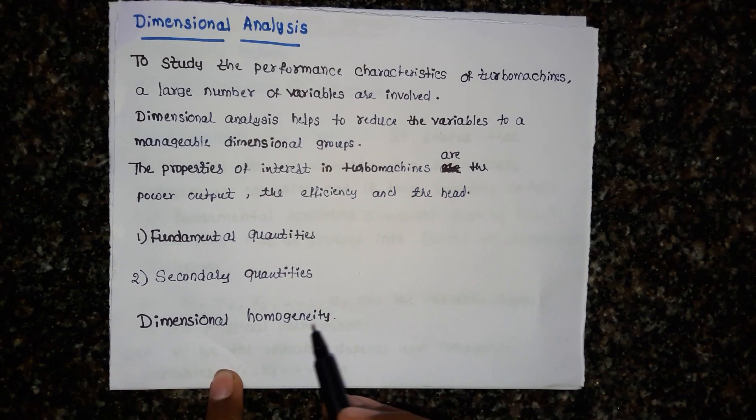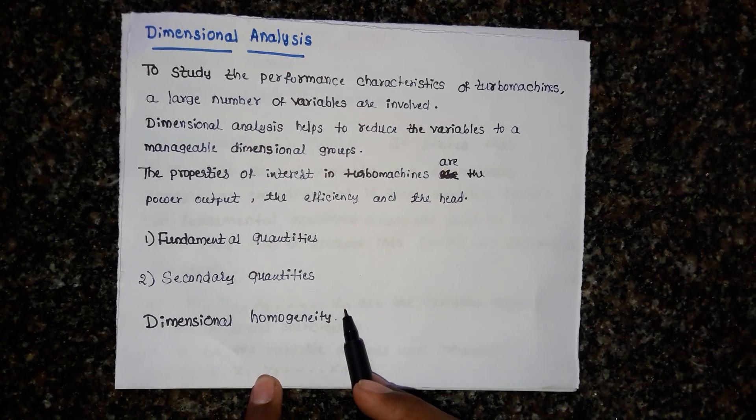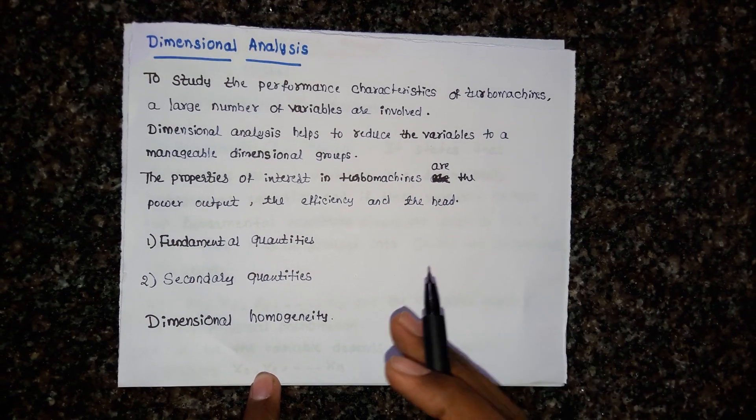Dimensional homogeneity states that in an equation, the right hand side and left hand side of the equation dimensions should be equal.